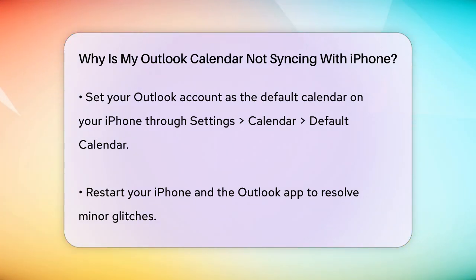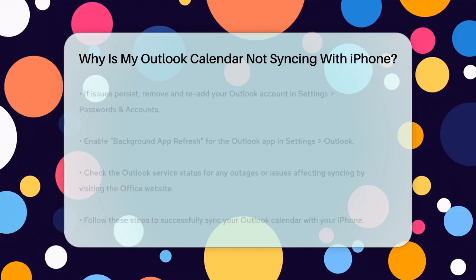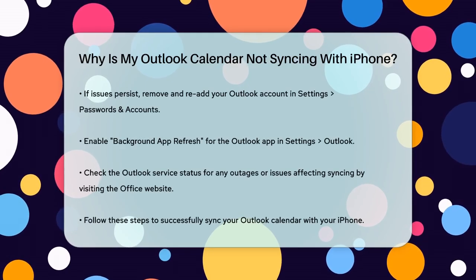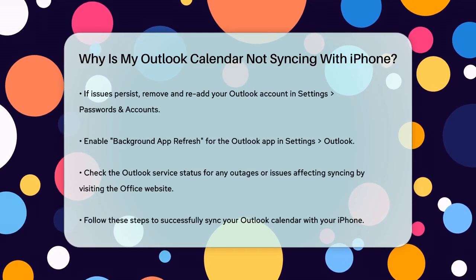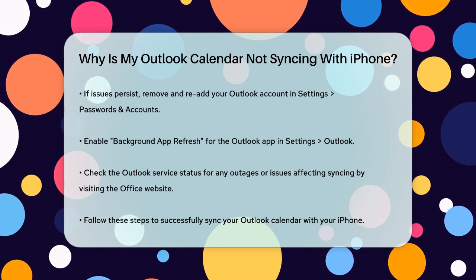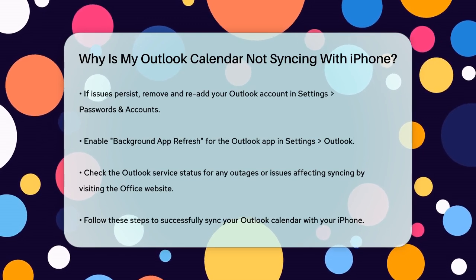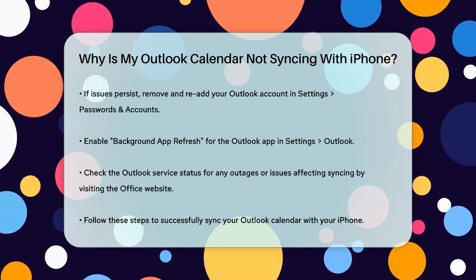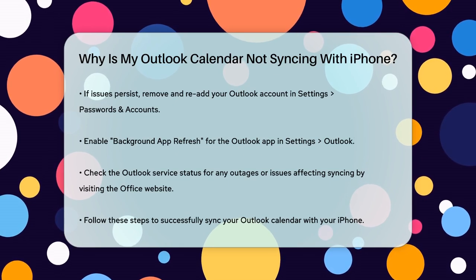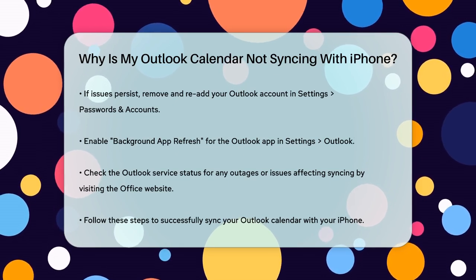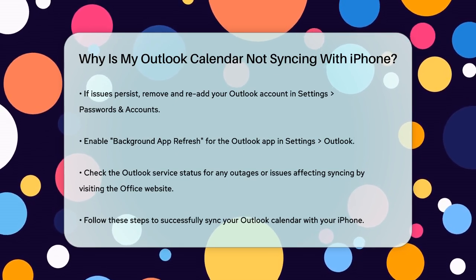Then add it back by going to Settings, Passwords and Accounts, Add Account, Outlook. Additionally, make sure that the Background App Refresh option is enabled for the Outlook app. This allows the app to sync data in the background. Go to Settings, Outlook, and enable Background App Refresh if it's turned off.